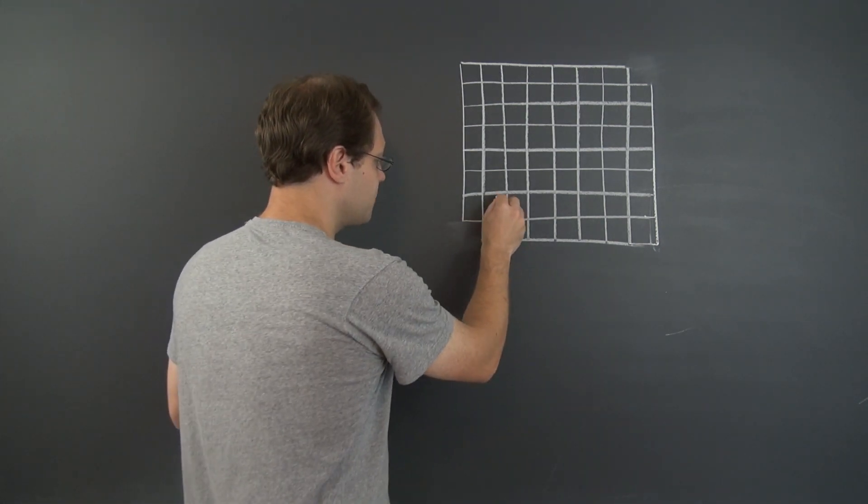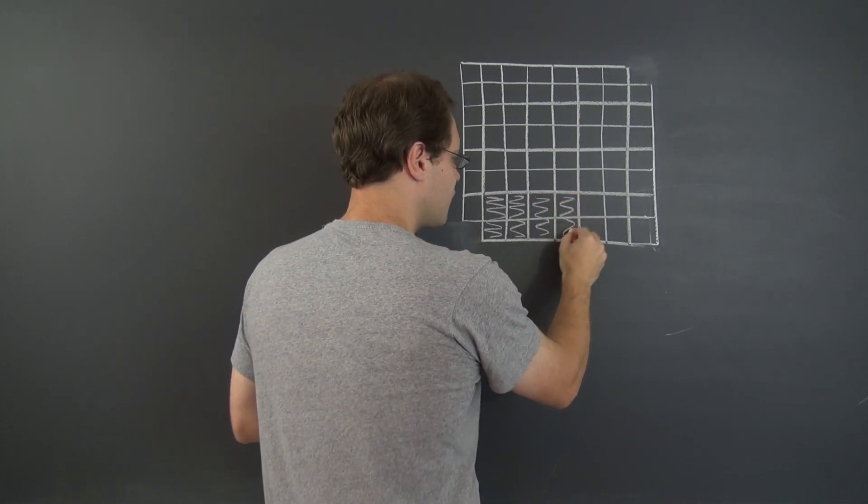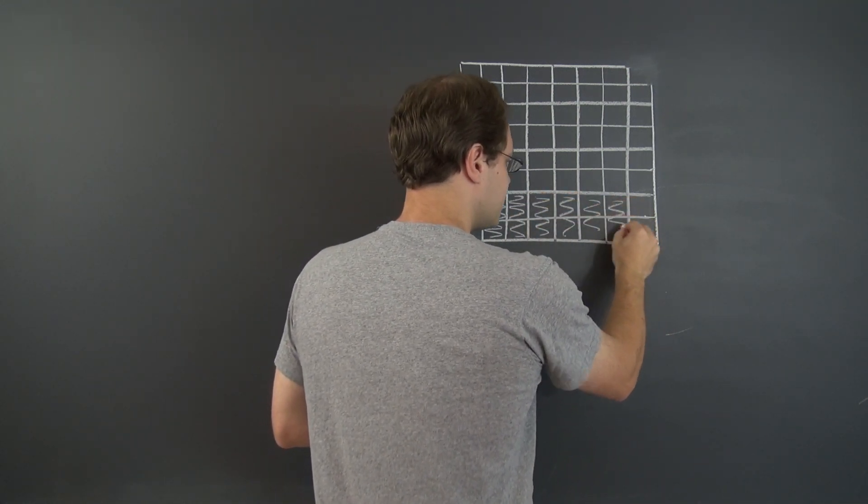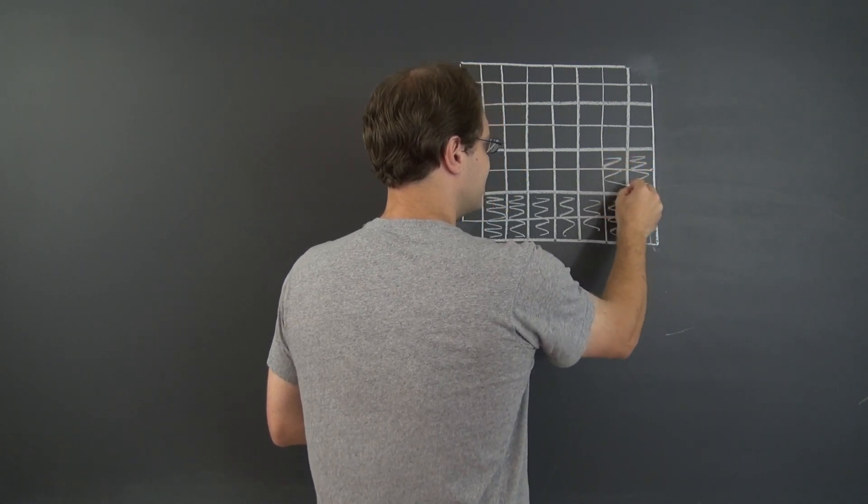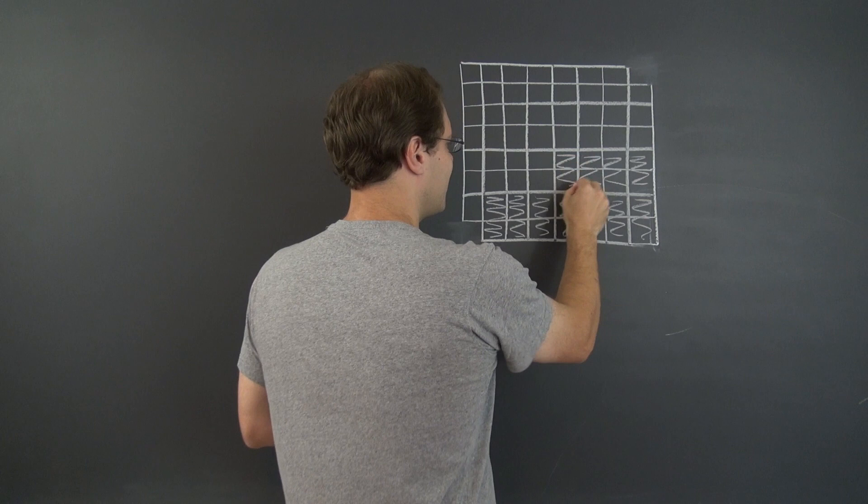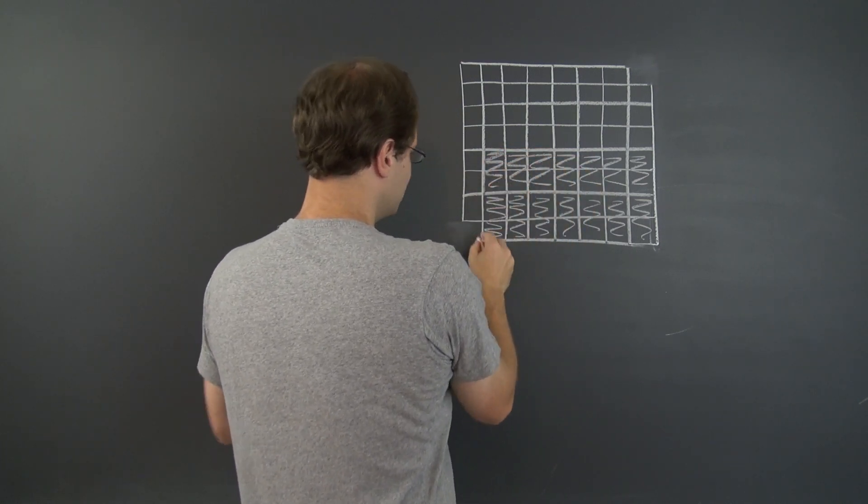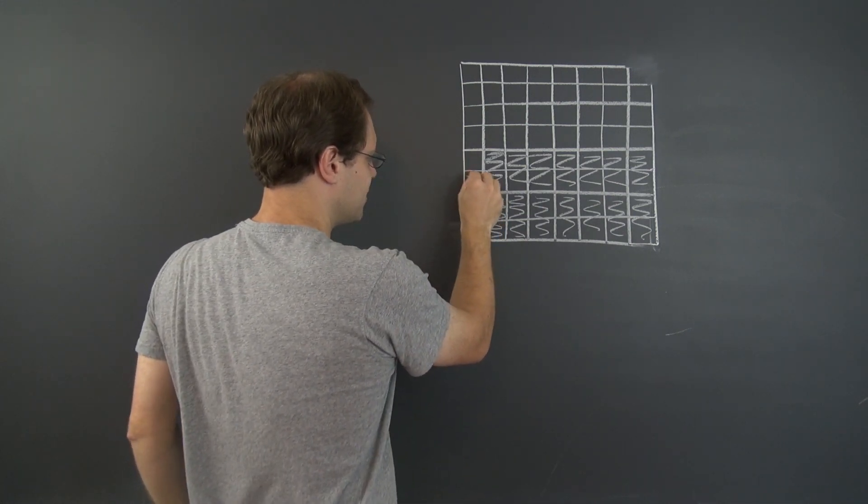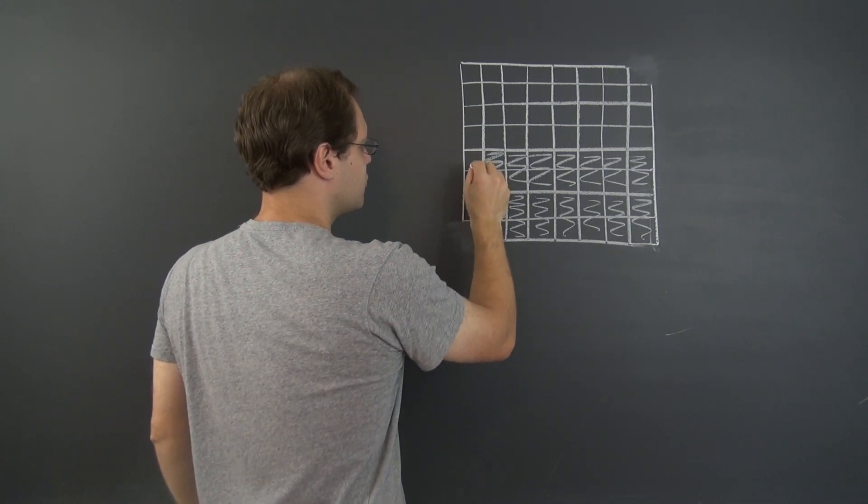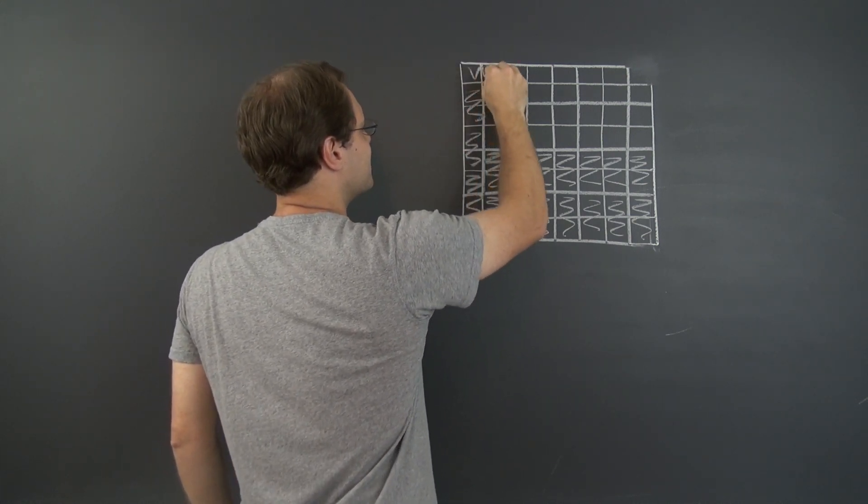And so here would be 1, 2, 3, 4, 5, 6, 7, keep going, 8, 9, 10, 11, 12, 13, 14. Now I have to be careful. I can't put one here because that will block this square. Lost count, but it doesn't matter. Alright, let me keep trying.